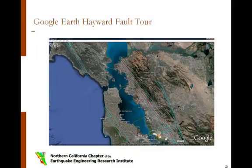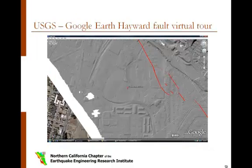Today, USGS provides an interactive map and tour of the active traces of the Hayward Fault using Google Earth. The online map superimposes the fault on three-dimensional representations of the geographic features and major structures along the fault. East Bay business or homeowners can easily find their locations and see how close they are to the fault.